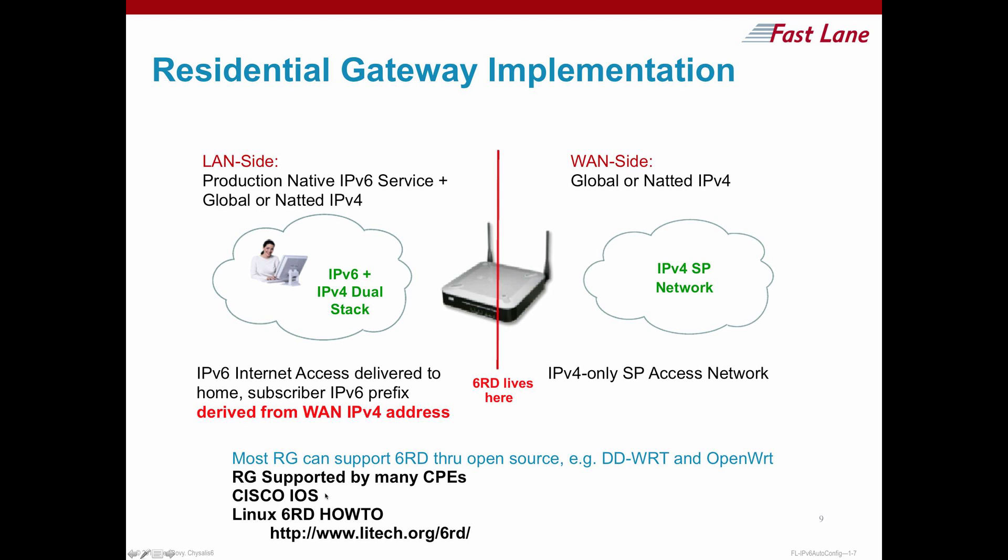Cisco supports 6RD in IOS. In the latest release of IOS, both the residential gateway function and the border relay function are provided. On Linux, you also have the residential gateway functionality, which gives you access to the IPv6 internet from your IPv4 internet access, should your ISP support 6RD.